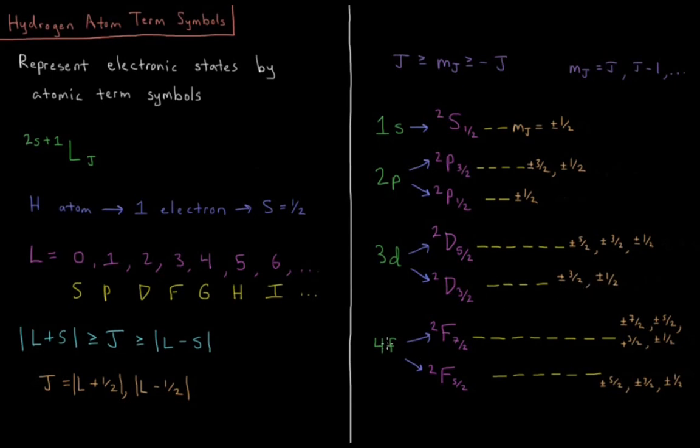For an f function, you have doublet f 7 halves, and doublet f 5 halves, 3 plus 1 half, and 3 minus 1 half. And the values of m sub j, there's either 8 possibilities for j equals 7 halves, and 6 possibilities for j equals 5 halves.